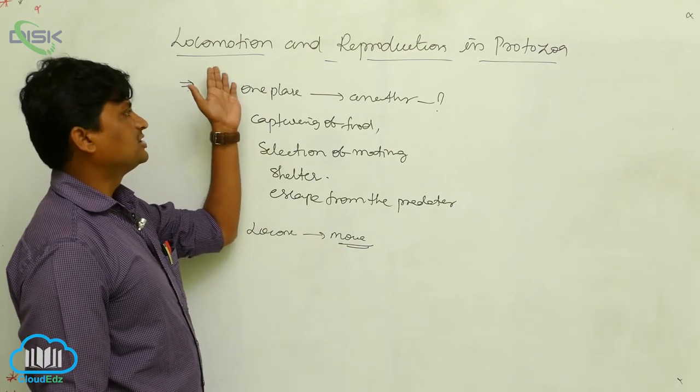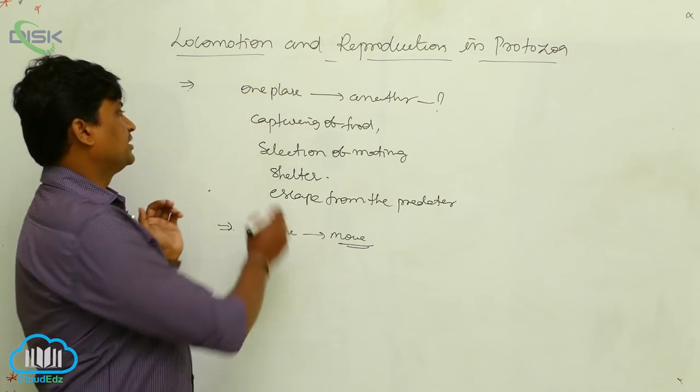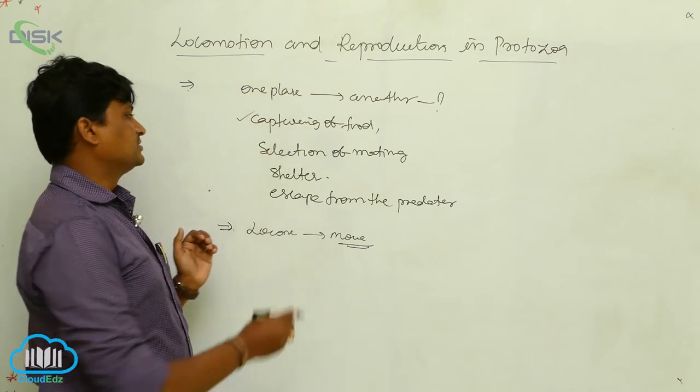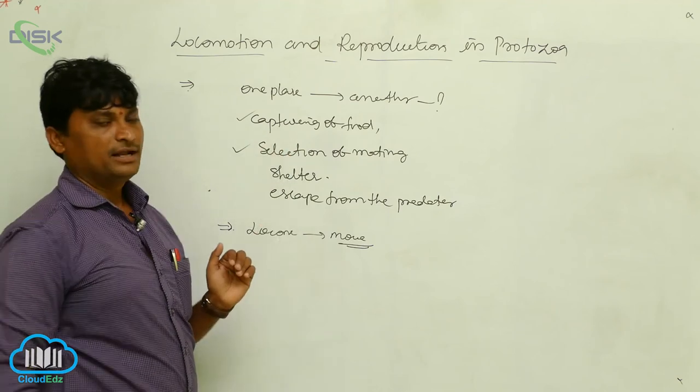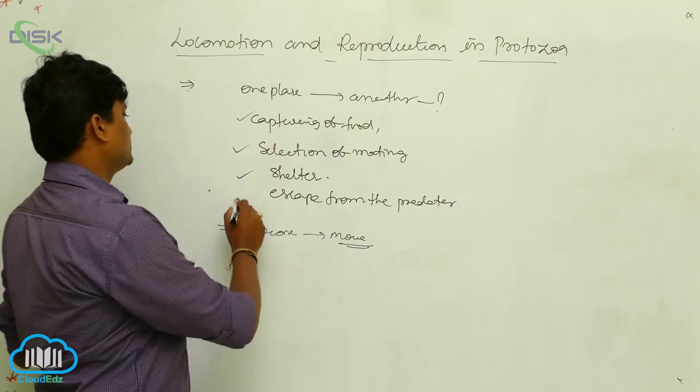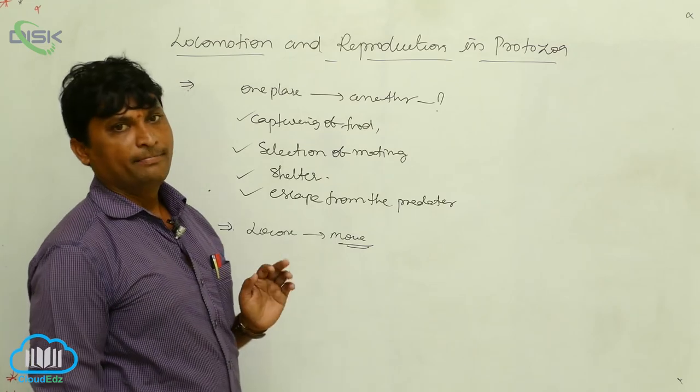Okay, organisms must show locomotion. First one goes to capturing of food materials. Second one goes to selection of mating. Third one goes to shelter. Fourth one goes to escape from the predators.